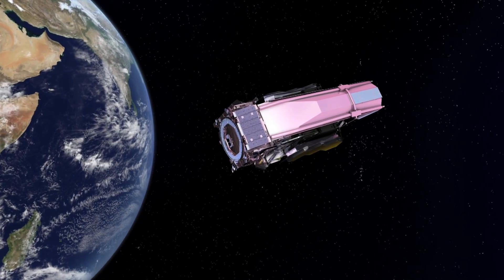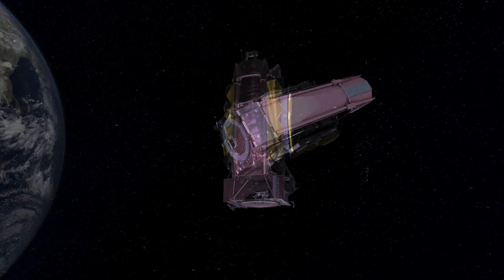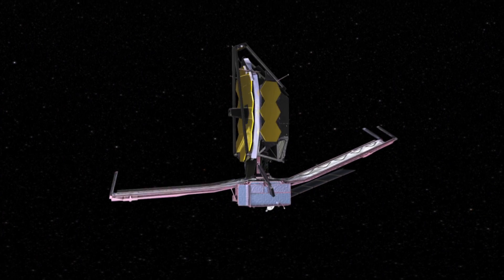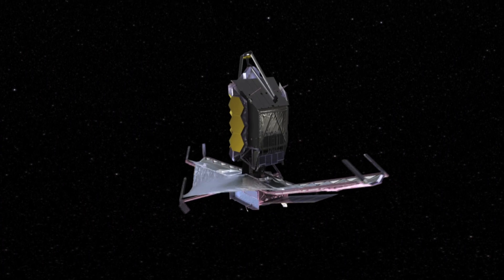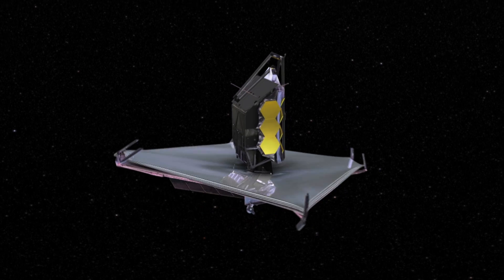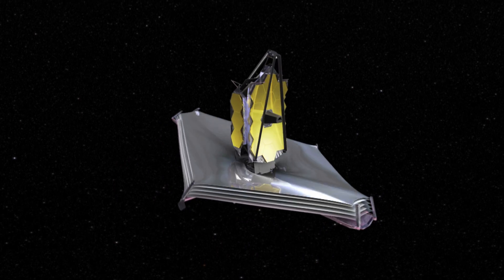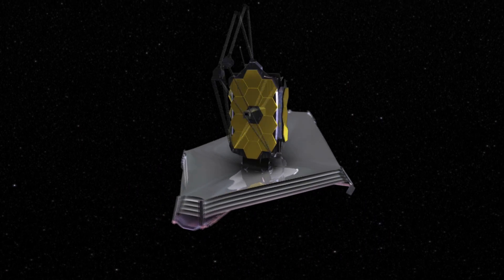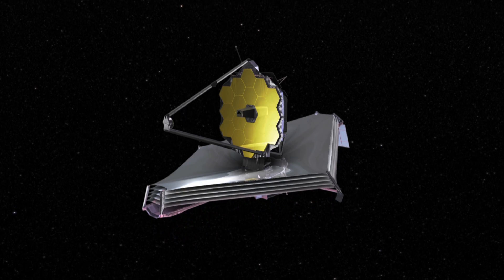Once in orbit, one million miles from Earth, Webb will transform into an observatory with a tennis court-sized sunshield and 21-foot-wide primary mirror.